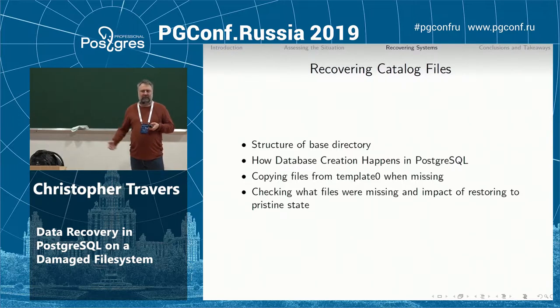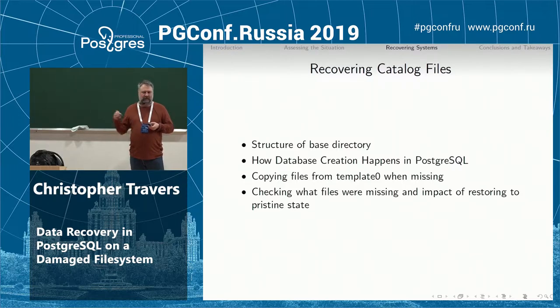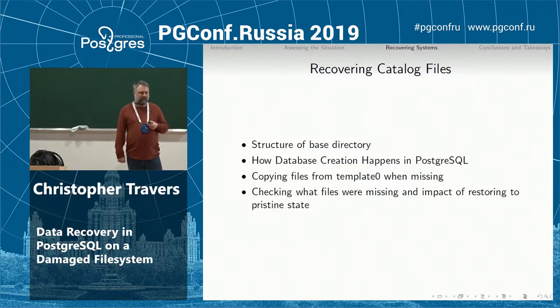Our general strategy: recover the catalogs enough that we can re-index them, then dump what's on SSD. If pg_class or pg_attribute had been missing, it would have been so much harder to recover that we'd probably just walk away.